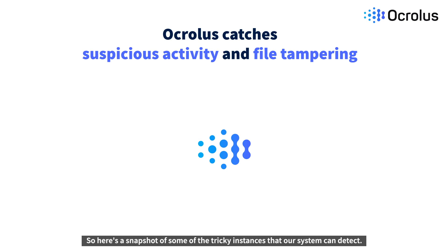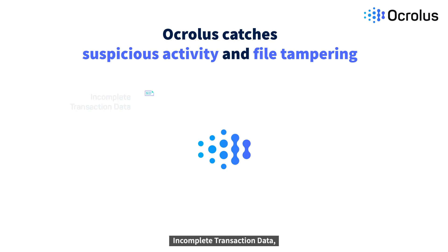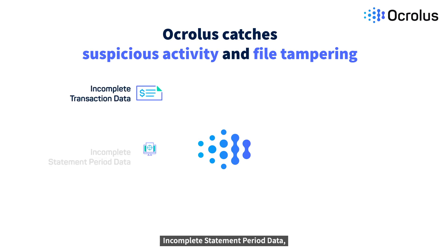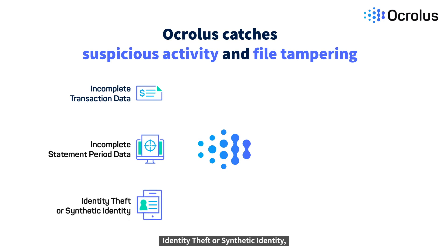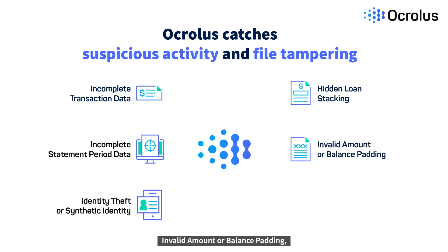Here's a snapshot of some of the tricky instances that our system can detect: incomplete transaction data, incomplete statement period data, identity theft or synthetic identity, hidden loan stacking, invalid amounts or balance padding, and also photoshopped data.